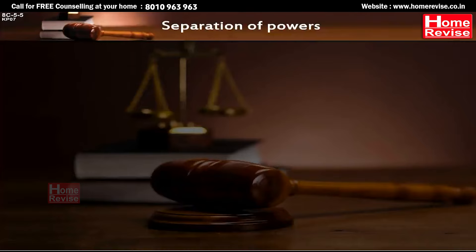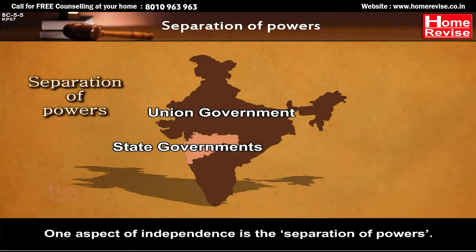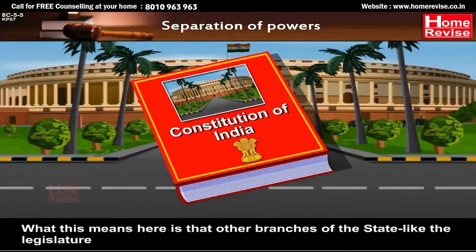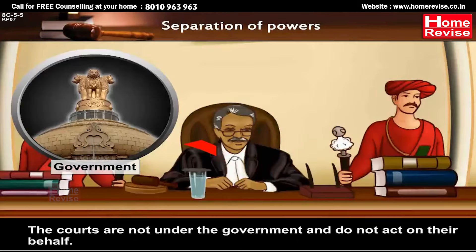Separation of powers: One aspect of independence is the separation of powers. This, as you read in Chapter 1, is a key feature of the Constitution. What this means here is that other branches of the state like the legislature and the executive cannot interfere in the work of the judiciary. The courts are not under the government and do not act on their behalf.